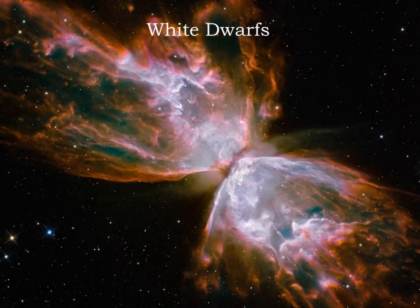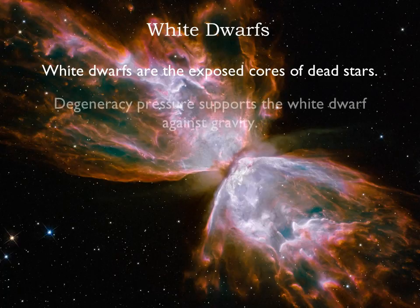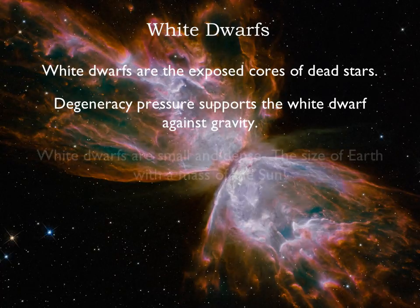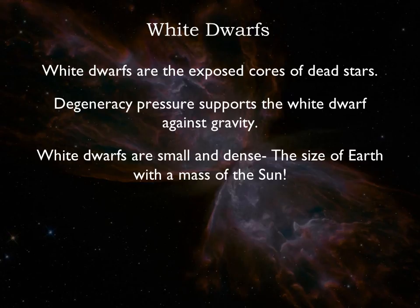We will get into the details of white dwarfs in the next chapter — they are fascinating objects. For now, just know that white dwarfs are the exposed cores of dead stars. They are often quite hot, but eventually they will cool and no longer emit visible light. White dwarfs are supported by degeneracy pressure, which is why they can be so small and dense. A typical white dwarf is the size of Earth with the mass of the sun.